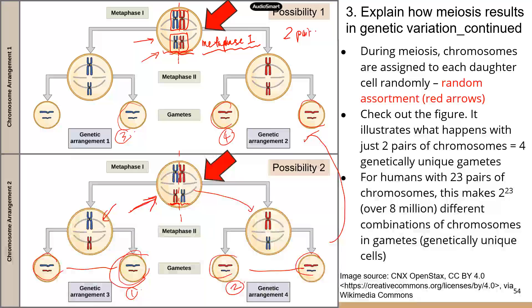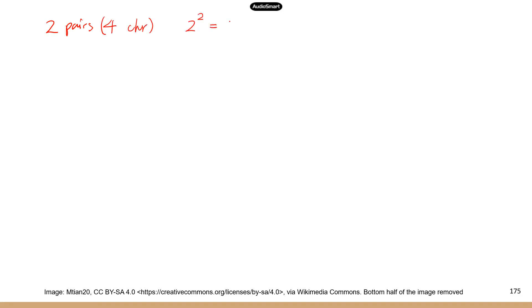From two pairs of chromosomes — which is four chromosomes in total — we have two to the second power, which is four unique combinations of chromosomes, giving us four genetically unique gametes.